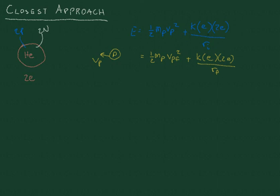There are a couple of terms we can eliminate. Because we're firing the proton from very far away, the initial distance is very large, so the initial potential energy term becomes zero. And we want to find the point of closest approach, which is where the proton's velocity is zero, so we can also drop the final kinetic energy term.